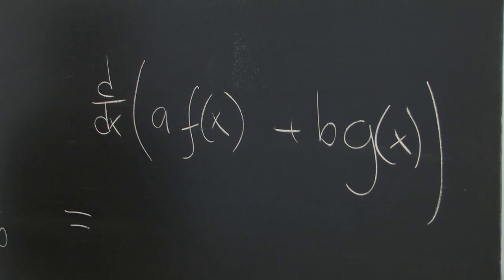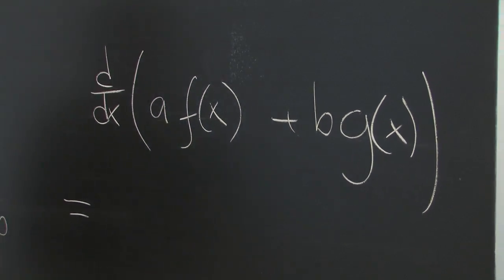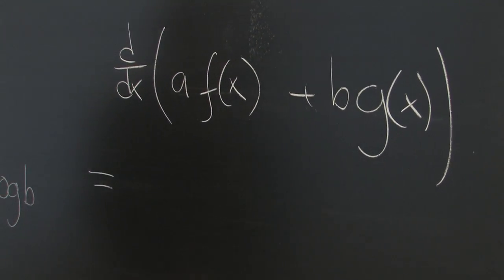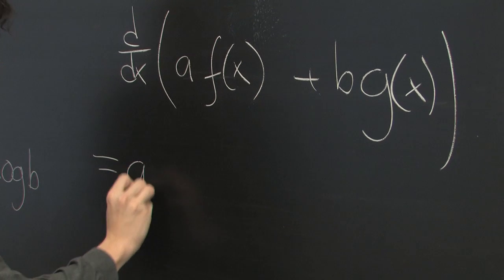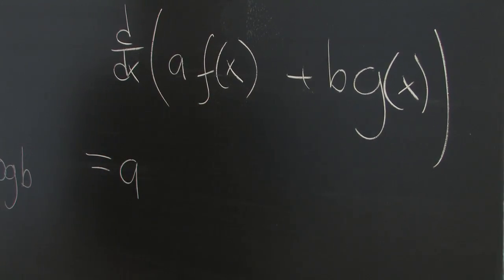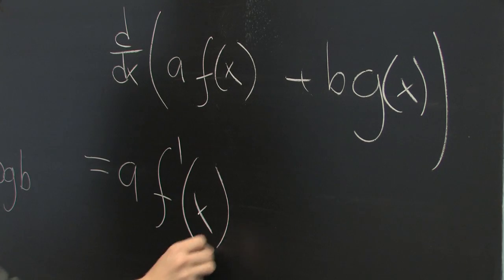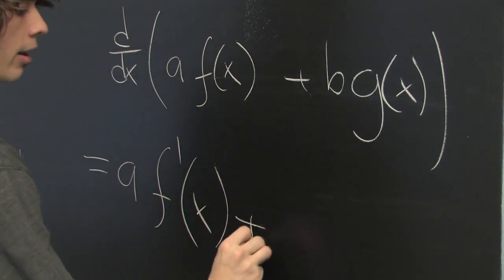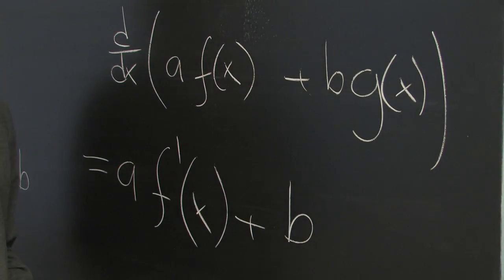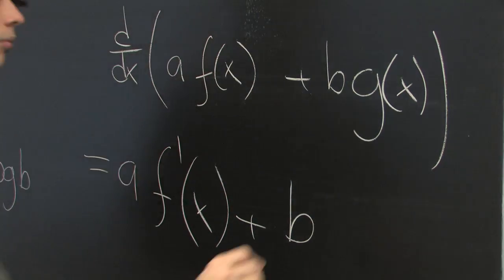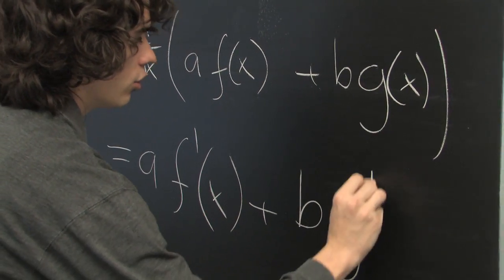Again, we can apply the linearity of the derivative, which tells us that this is equivalent to a times the derivative of f of x, which here we can simply call f prime of x, plus b times the derivative of g of x, which is frequently indicated g prime of x.